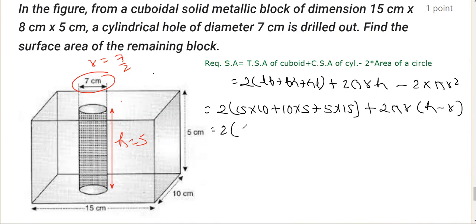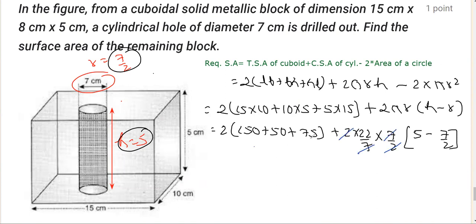15 × 10 is 150, 10 × 5 is 50 plus 75. If I replace π with 22/7, radius is 7/2, h is 5 minus radius 7/2. We can reduce: 7 and 7 get cancelled, 2 and 2 get cancelled. With further working, it is 2 multiplied by this, giving 275, plus 22 times—taking LCM it's 10 minus 7, that is 3/2.